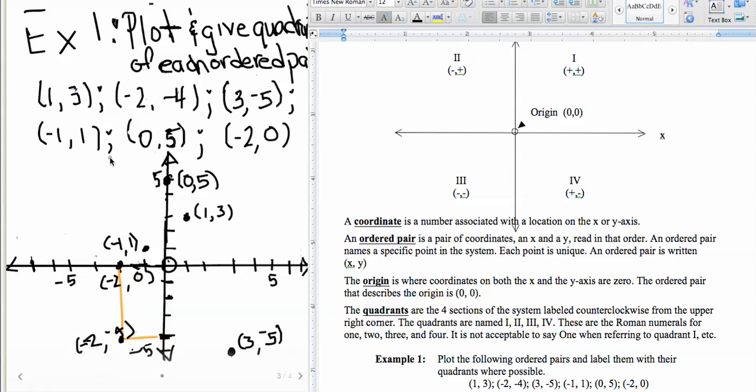And now the last thing that we need to do is we need to go and talk about the quadrants. So we're going to talk about the quadrants that each of these ordered pairs are in very quickly. So this ordered pair (1, 3) was right here. That's in the first quadrant, so we would say that was in quadrant 1.